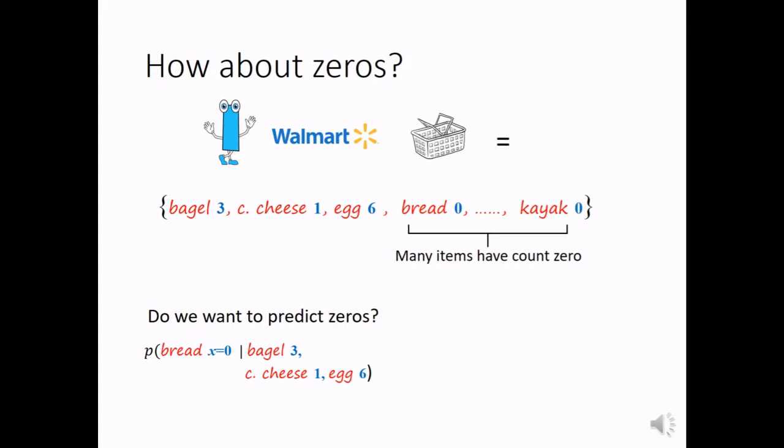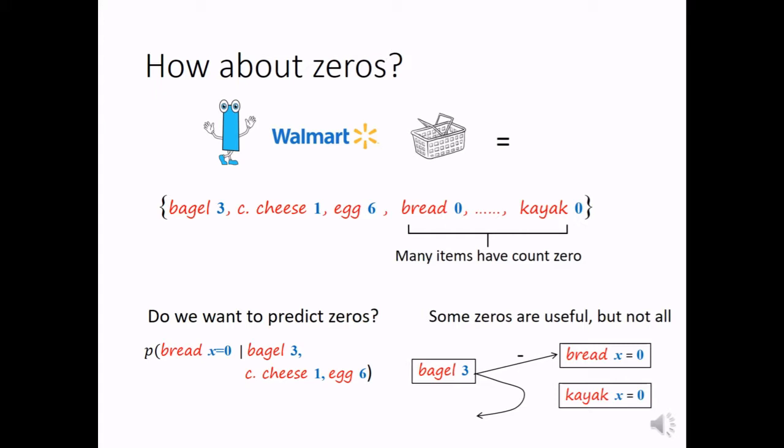Some zeros are useful, but some are not. For example, if I buy three bagels for my breakfast, then I don't need bread anymore. So there is one type of negative correlation here. But for a kayak, I don't buy a kayak because I don't use it, not because I have three bagels. So these two types of zeros should be explained differently.